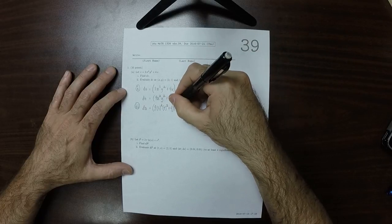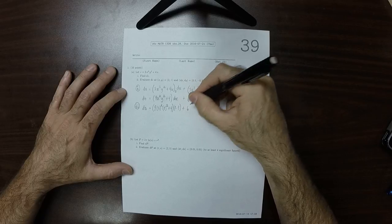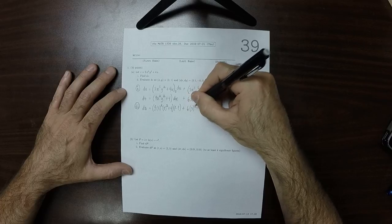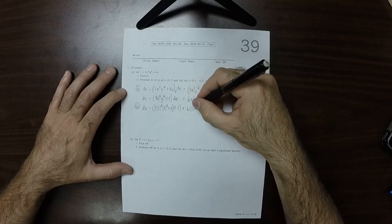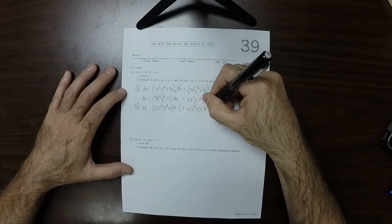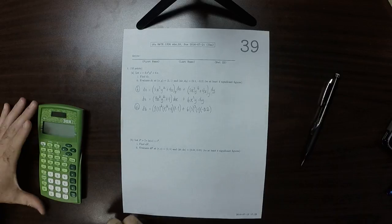Plug that into the machine here. So the answer I'm getting is 9 times 3 squared times 1, plus 4 times 0.1, plus 6 times 3 cubed times negative 0.2.